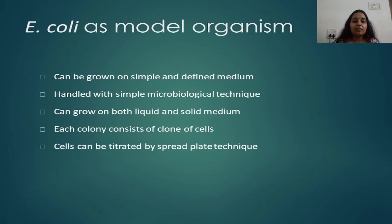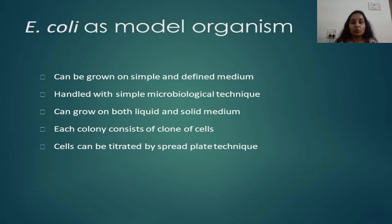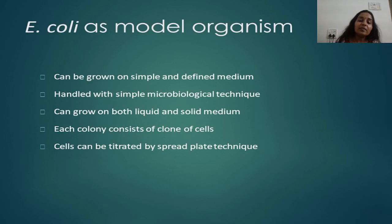E. coli can grow both on a nutrient liquid medium as well as on solid agar, so isolation can be easily done. Several colonies can be obtained over a period of 24 hours, and each colony consists of a clone of cells. So multiple clones of cells can be obtained in a very short span of 18 to 24 hours. Additionally, cells can be titrated by the spread plate technique, a viable count technique which can be easily performed.